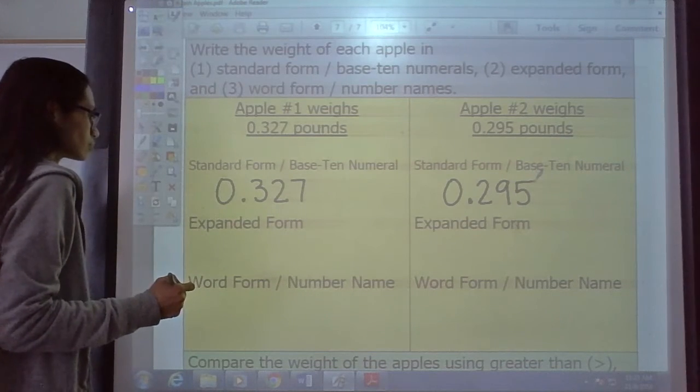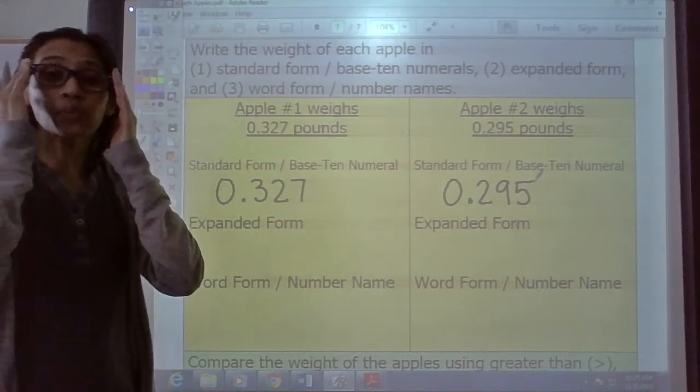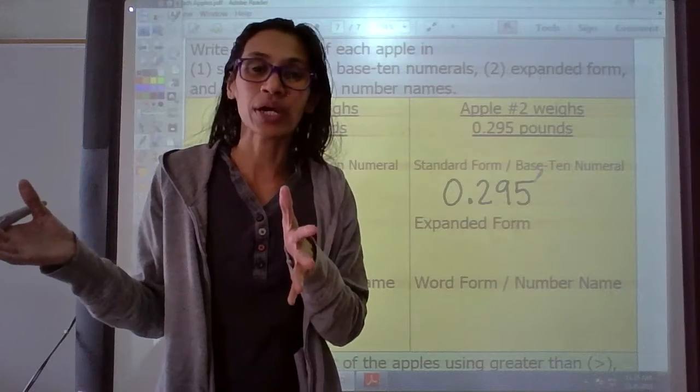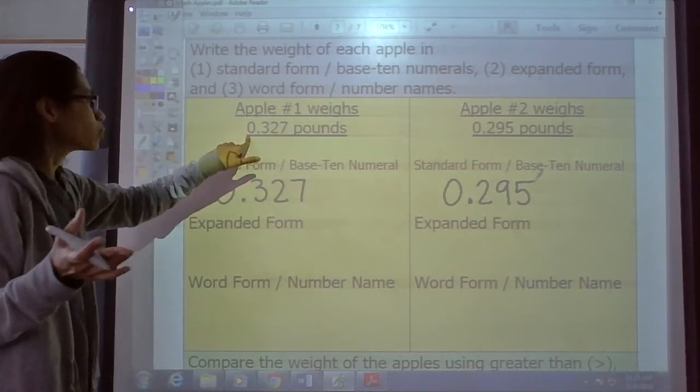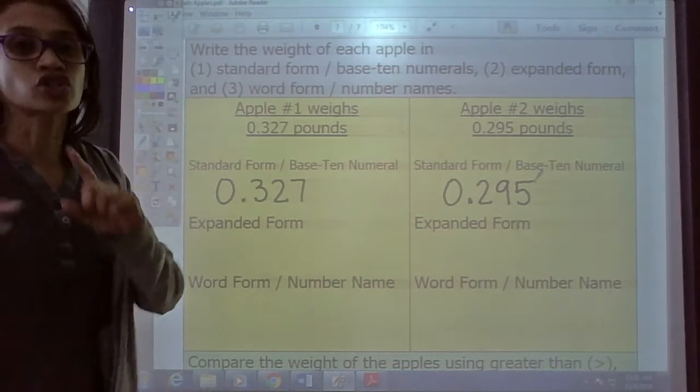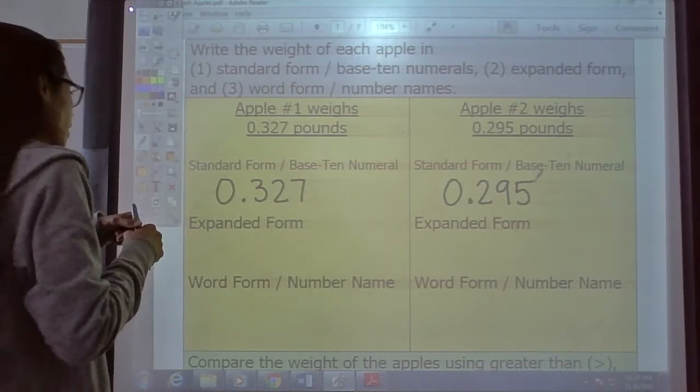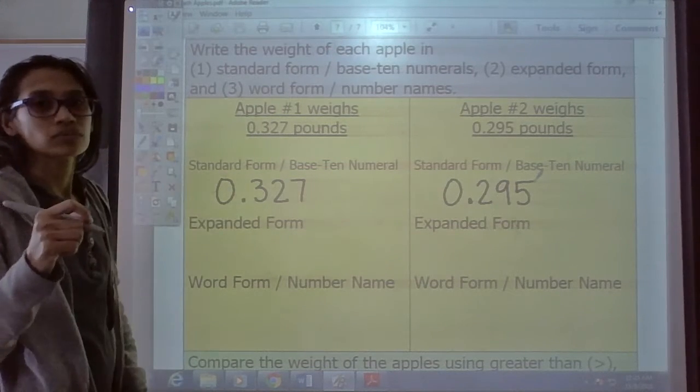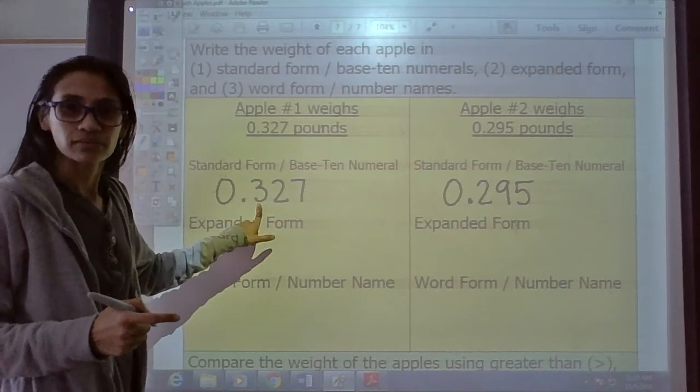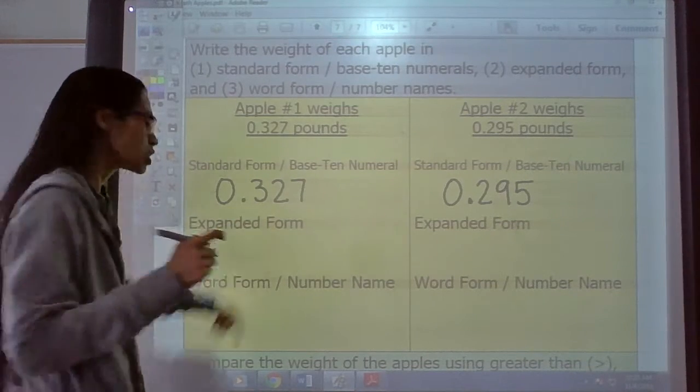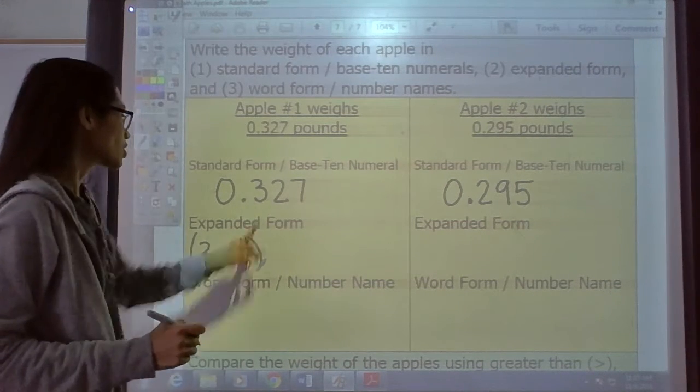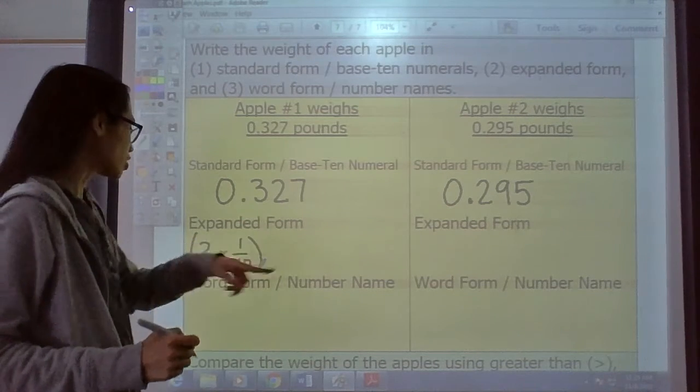All right, now, for the expanded form, the next one we need to write is expanded form. That means we need to expand it out, spread it out. We're going to do digit by digit, okay? So right here, we don't need to worry about the zero because that's nothing. Let's write that three. Now, I'm going to show you one way to write that. We're going to write the three, and what place is that in? That is the tenths place. So we're going to write three times one tenth, just like that, because that's the tenths place, okay? The next digit, write the plus.